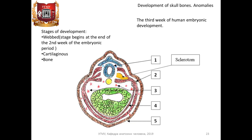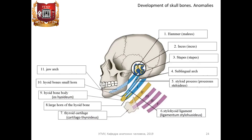The onset of the bone stage in different parts of the skull is different. In the lower jaw, the ossification point appears on the 39th day, and in the basilar part of the occipital bone on the 65th day of intrauterine development.